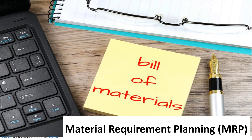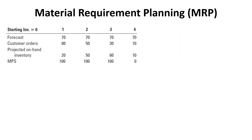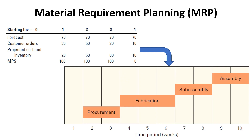Hello, everyone. As you know, material requirement planning is a process that translates the finished product requirements of the master schedule into time-phased requirements for subassemblies, component parts, and raw materials, working backward from the due date using lead times and other information to determine when and how much to order.